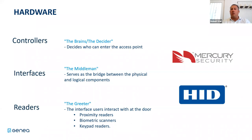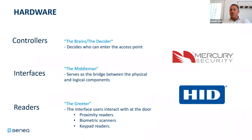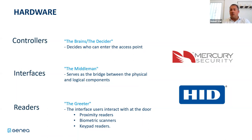When we go into the controllers, there are controllers, interfaces, and readers. Maybe talk a little about what each one does very specifically - why do you need a certain number of interfaces per reader, and why do we have Mercury and HID? What's the importance of both Mercury and HID?